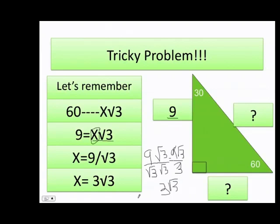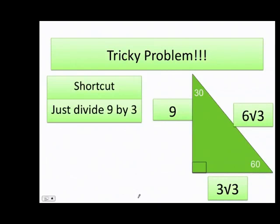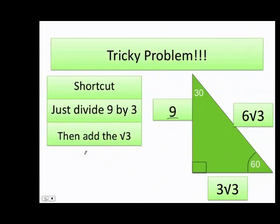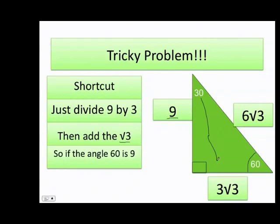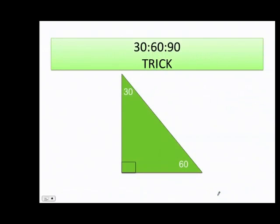Can I do this an easier way? Yes — here's the shortcut. When they give you the 60-degree side as a whole number, just divide that number by 3, then add the square root of 3 to your answer. So 9 divided by 3 equals 3, and then add √3 — the value of x is 3√3. Also, the hypotenuse is 2 times the value of x, so in this case it's 2 times 3 times the square root of 3.